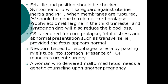When the woman goes into labor, blood should be arranged and kept ready in case of PPH. Fetal lie and position should be checked. Syntocinon drip will safeguard against uterine inertia and PPH. When membranes are ruptured, PV should be done to rule out cord prolapse. Prophylactic oxytocin in the third stage and Syntocinon drip will reduce blood loss. Caesarean section is required for cord prolapse, fetal distress, and abnormal presentations like transverse lie.